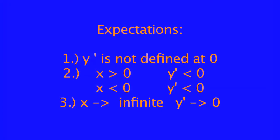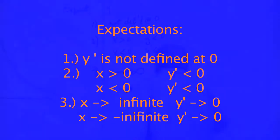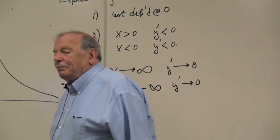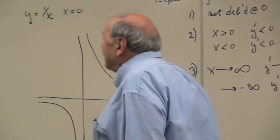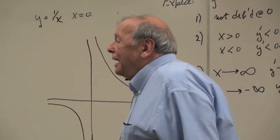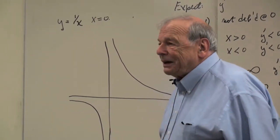What should happen as x goes to infinity? y prime should approach 0, and similarly, as x approaches minus infinity, y prime should also approach 0. And there are other things that should be true, but we won't do them right now. So now let's make the calculation and see if it fulfills our expectations.